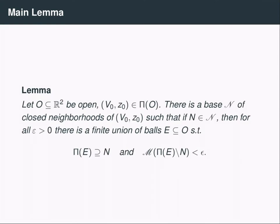The idea behind this lemma is as follows: if I have a base at every point in my space and look at the union of all these bases, then I can generate the original topology using these base elements — that is, I can write any open set as a union of these base elements. This lemma says I can approximate any base element by the projection of some set in Euclidean space. So if I can approximate every base element, and any open set can be written as a union of base elements, that means I can approximate any open set by a projection of a set in Euclidean space.